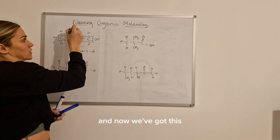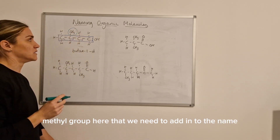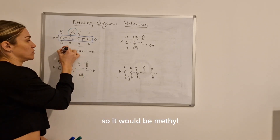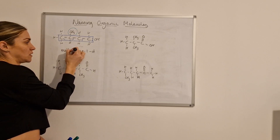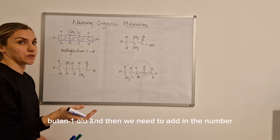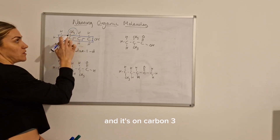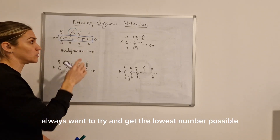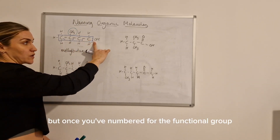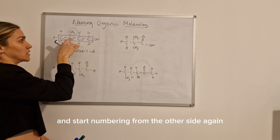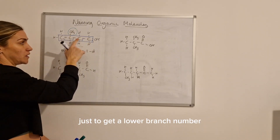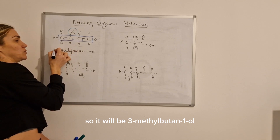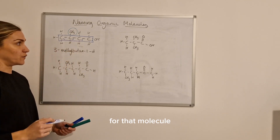Now we've got this methyl group here that we need to add into the name. It's a methyl group because it's got one carbon in it, so it would be methyl butan-1-ol. Then we need to add the number location for the branch — it's on carbon three. We can't re-number the chain; once you've numbered for the functional group that takes priority, you can't switch and number from the other side just to get a lower branch number. So the name for this molecule is 3-methylbutan-1-ol.